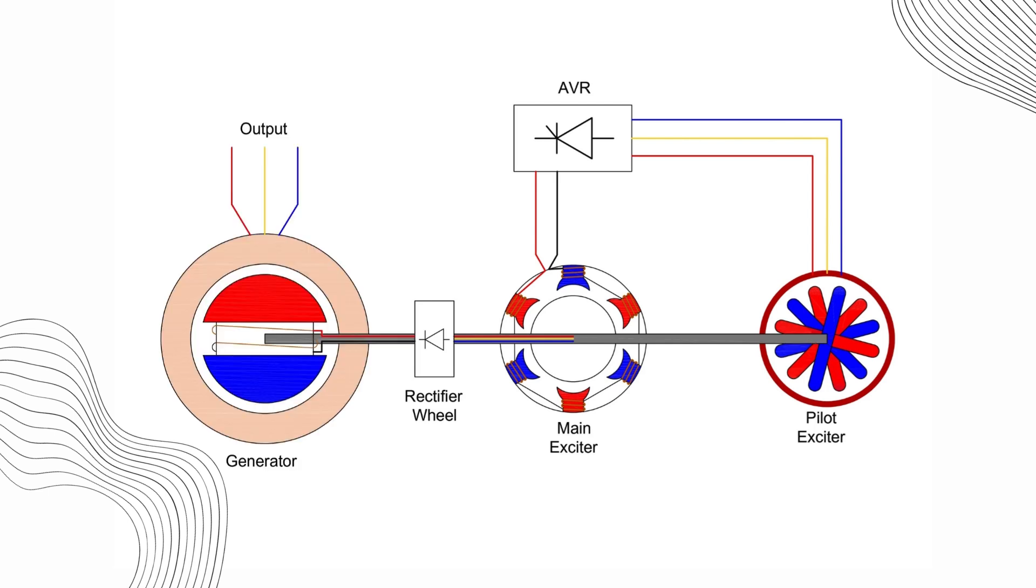Except for the AVR, all other components are mounted on the same shaft as the main generator. Let's break down how each of these components functions.